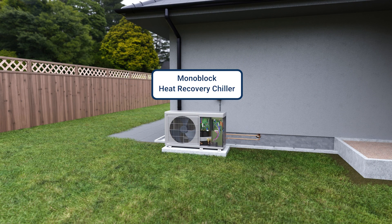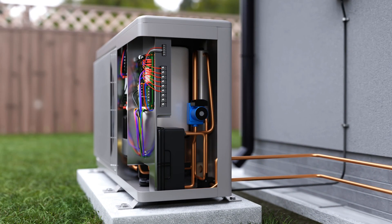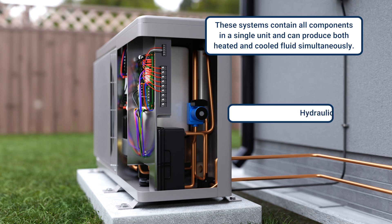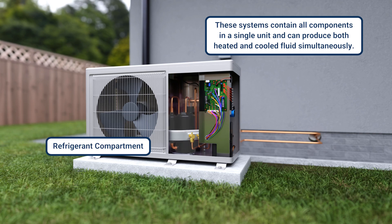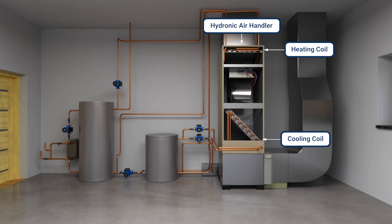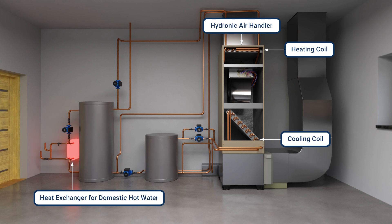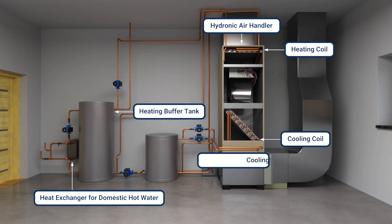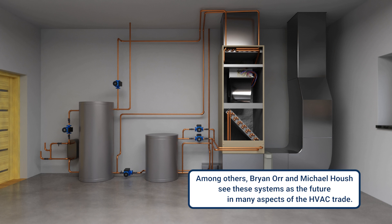Finally, we're going to talk about monoblock, heat recovery chiller, and secondary fluid systems. These systems contain all components in a single unit and can produce both a heated and cooled fluid simultaneously. They can be used for indoor heating, indoor cooling, dehumidification, domestic hot water, and anything else requiring heating or cooling. They do require more complicated designs and a place to put the excess heating or cooling depending on the need. Many people, including myself and my friend Michael Hausch, see these systems as the future in many aspects of the HVAC trade.